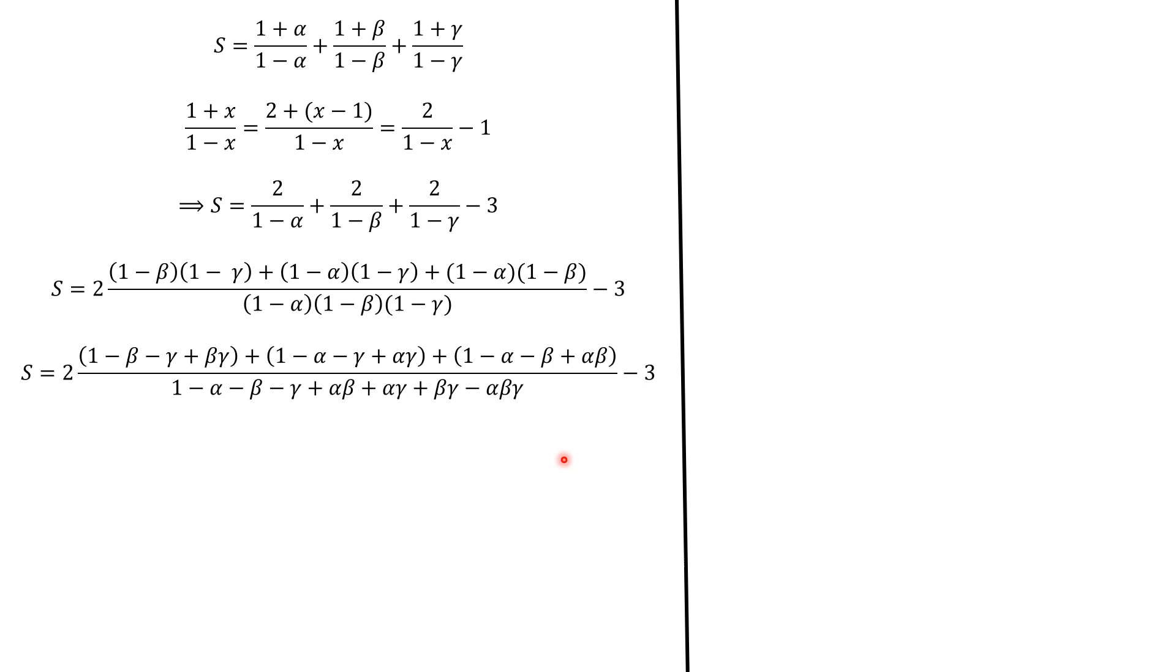So we will improve the terms. We have 1 plus 1 plus 1, which is 3. And 1 alpha, 1 alpha. So it is minus 2 alpha. The same beta, beta, gamma, gamma, alpha beta, alpha gamma, and beta gamma. We do the same here. Now we notice the symmetric polynomials. This one in bold. This one in red. And this one in green.